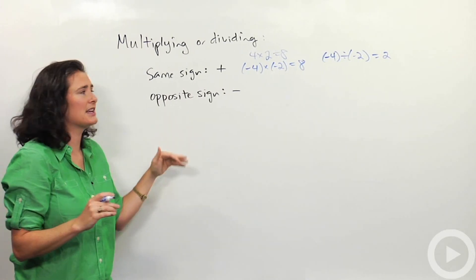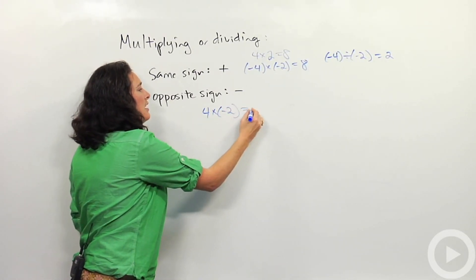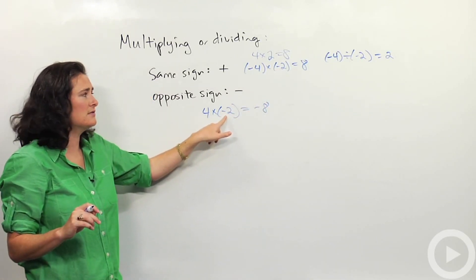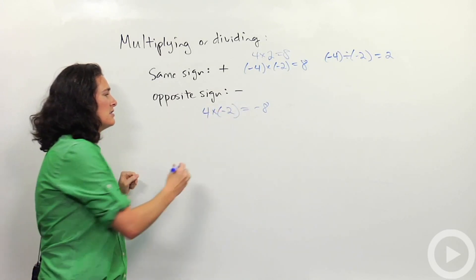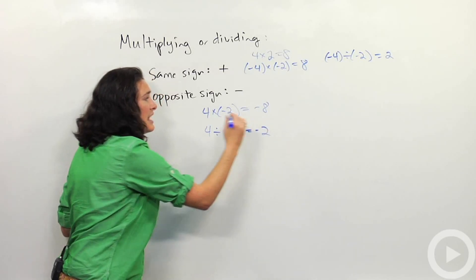Now contrast that with opposite signs. For example, if I have 4 times negative 2, that's negative 8. Some people think of this as the additive inverse of 2, however you want to think of it. Opposite signs, you're going to get a negative answer. 4 divided by negative 2, negative answer.